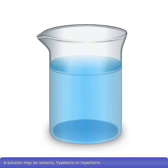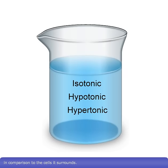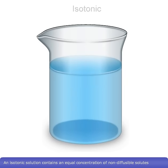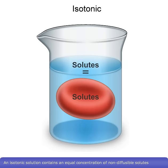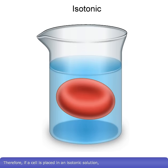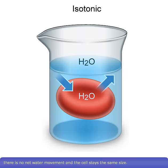A solution may be isotonic, hypotonic, or hypertonic in comparison with the cells it surrounds. An isotonic solution contains an equal concentration of non-diffusible solutes as the cytosol within a cell. Therefore, if a cell is placed in an isotonic solution, there is no net water movement and the cell stays the same size.